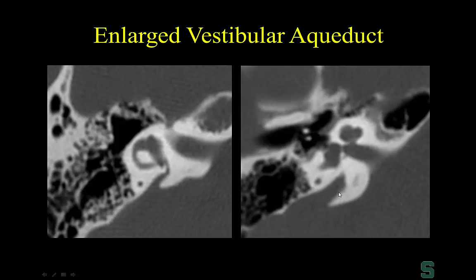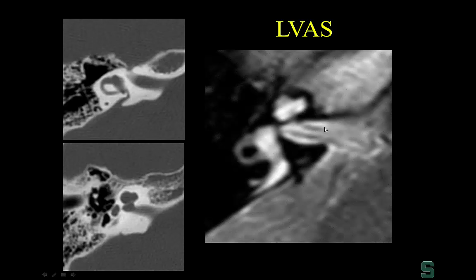The enlarged vestibular aqueduct can also be diagnosed on MR, where you can see the enlarged endolymphatic sac on T2-weighted images. When reviewing IAC MR studies, in addition to looking for vestibular schwannomas, remember to look for cochlear enhancement and on T2-weighted images look for enlargement of the vestibular aqueduct.